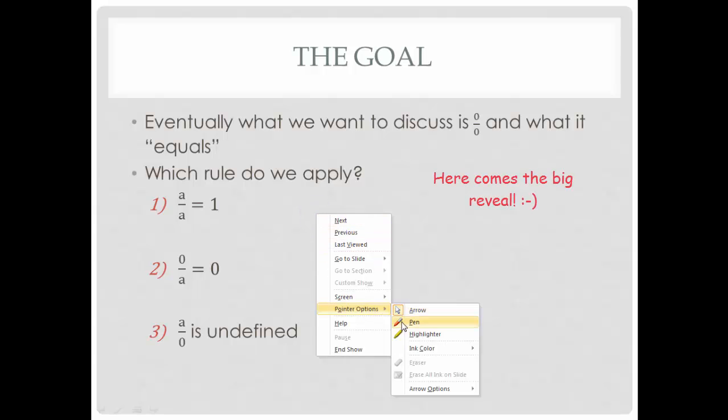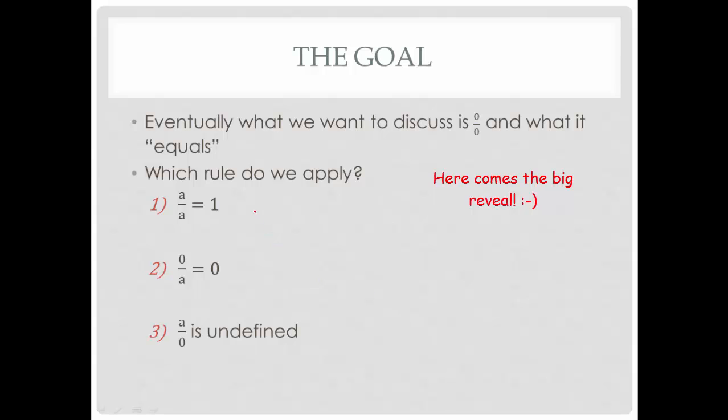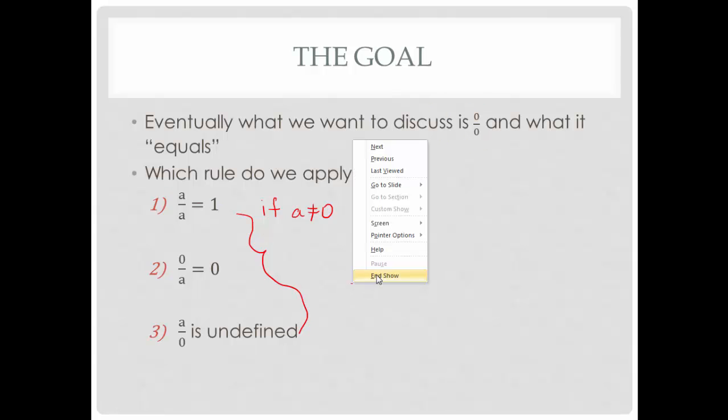The problem is all three of these, as written, are missing one very important addition. All three of these rules come with this added idea: If A doesn't equal 0. None of these rules work if A does equal 0. And that's exactly what we're looking at. So if you want to deal with that, you've got to change up what rule you're going to use.